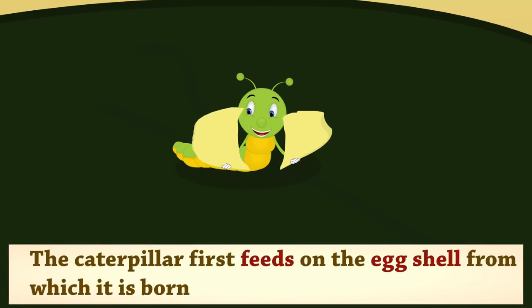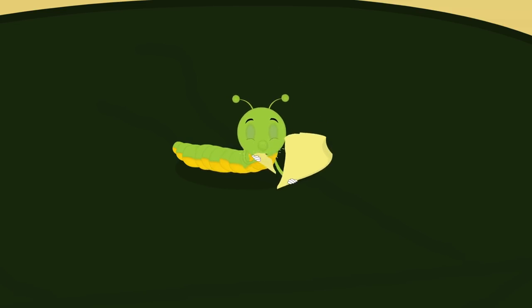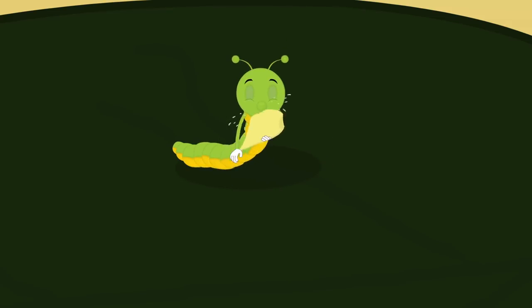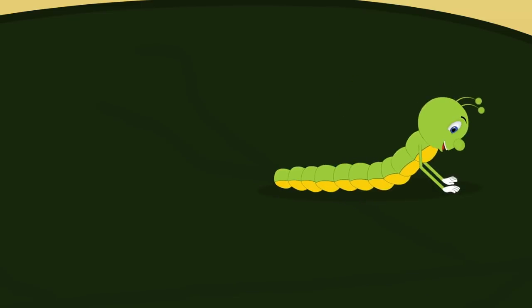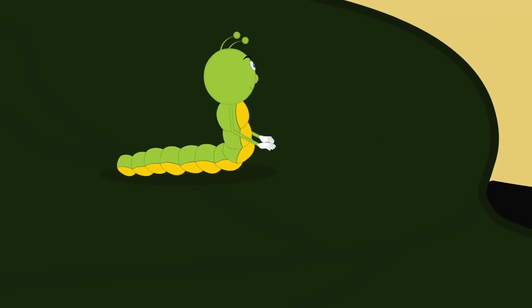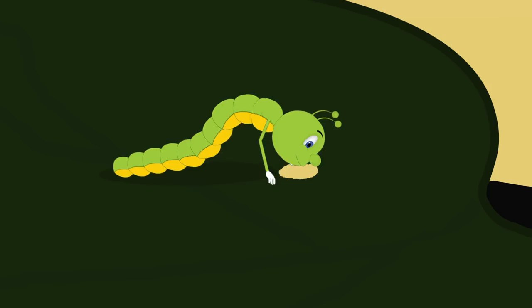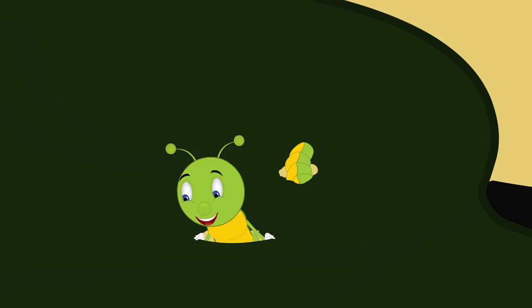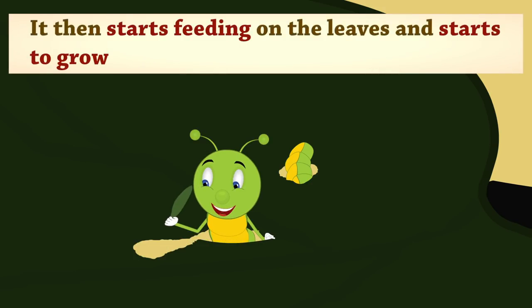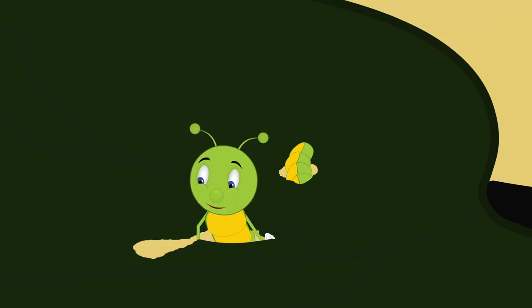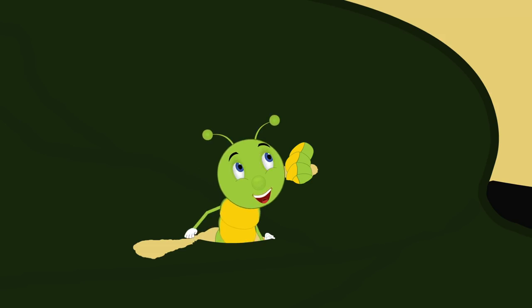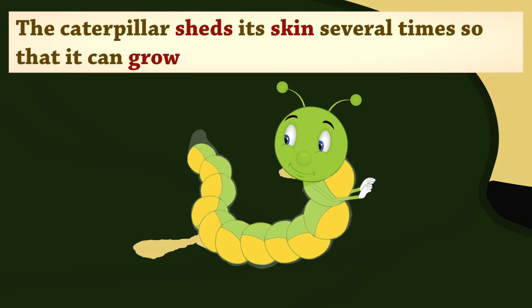The caterpillar first feeds on the eggshell from which it is born. It then starts feeding on the leaves and starts to grow. The caterpillar sheds its skin several times so that it can grow.